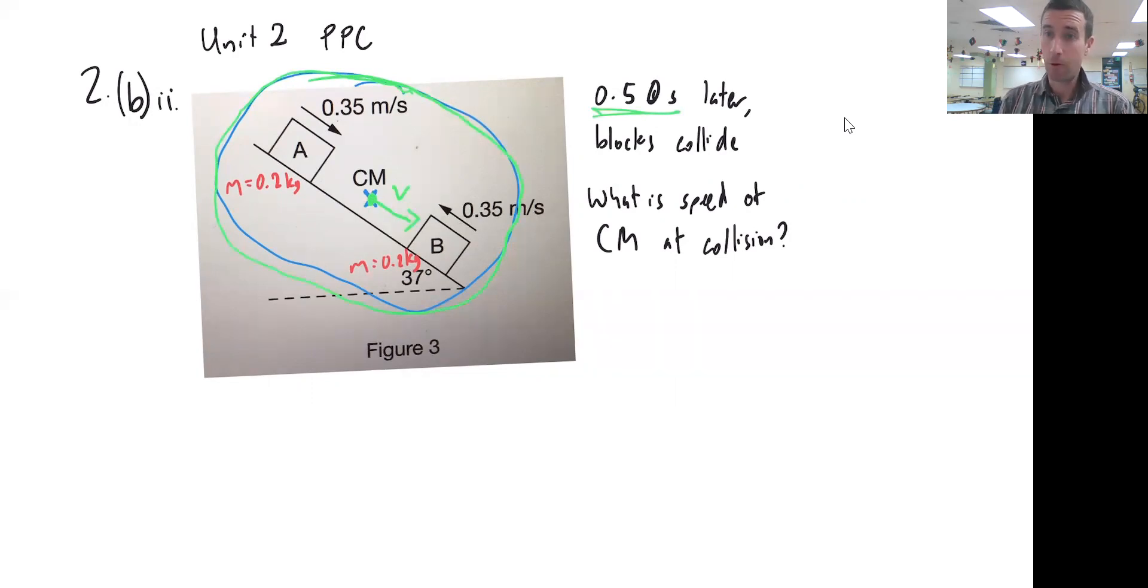So at this point, the center of mass would be accelerating due to the force of gravity, and the acceleration due to gravity is 9.8 meters per second squared, or 10 meters per second squared. I'm going to use 10 because it's going to make my math a little bit easier.